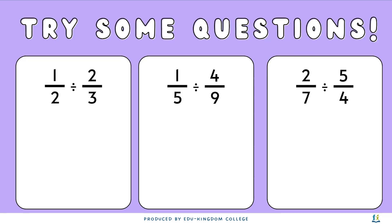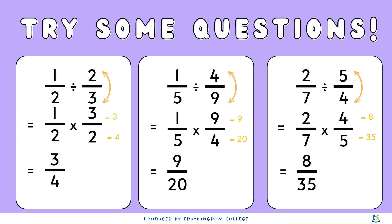If you've got the hang of it, pause the video and try these questions. First, on the left: 1 over 2 divided by 2 over 3. Flipping the second fraction gives us 3 over 2, so the question becomes 1 over 2 times 3 over 2. That gives us 1 times 3 equals 3 and 2 times 2 equals 4, so the new fraction is 3 over 4, which doesn't need simplifying.